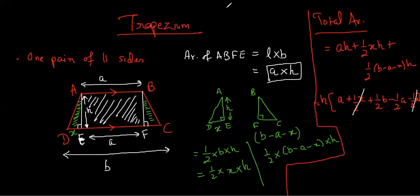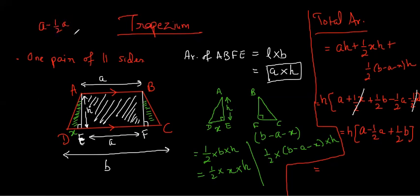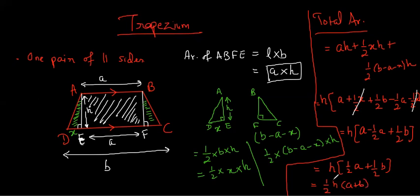What is left is h times [a minus half·a plus half·b]. And a minus half·a equals half·a. So we have h times [half·a plus half·b]. Taking half as common, we get half times h times (a plus b). That is the formula for the area of a trapezium.